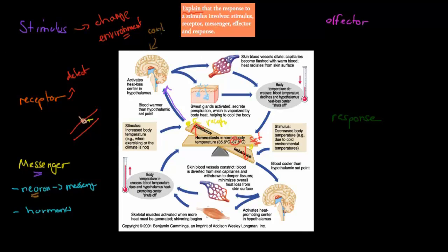The control center is the actual structure that decides what to do with the message. It's good to know there's usually a control center involved. For example, if the temperature has gone too high — say 38 degrees Celsius instead of 37 — the control center will send a message to the sweat gland in the skin and also to the blood vessels. These are our effectors because they will make the response happen.